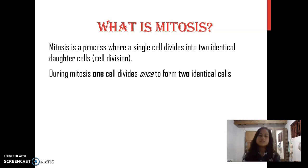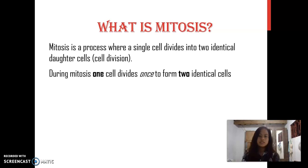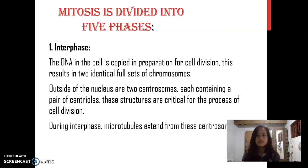What is mitosis? Mitosis is a process where a single cell divides into two identical daughter cells, or cell division. During mitosis, one cell divides once to form two identical cells. Mitosis is divided into five phases.